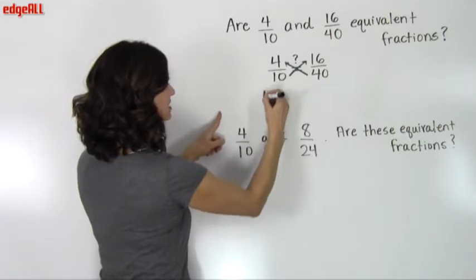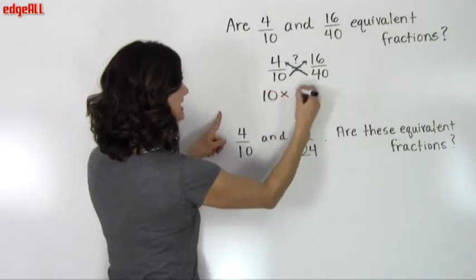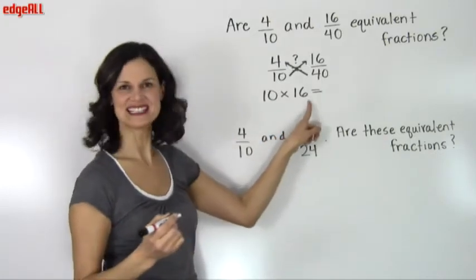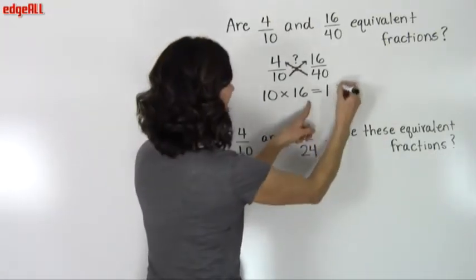So my first calculation is going to be, what is 10 times 16? 10 times 16 equals 160.